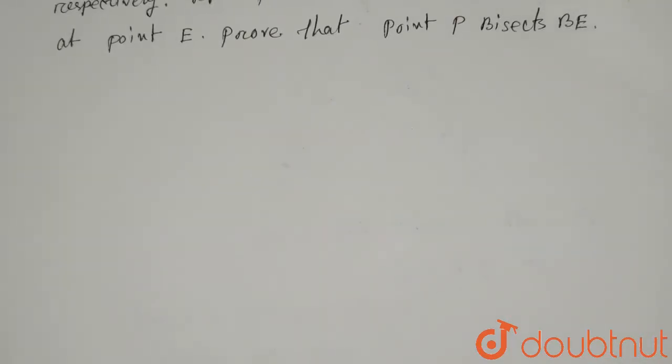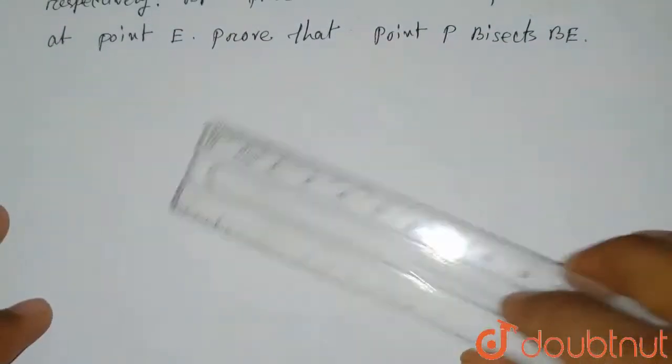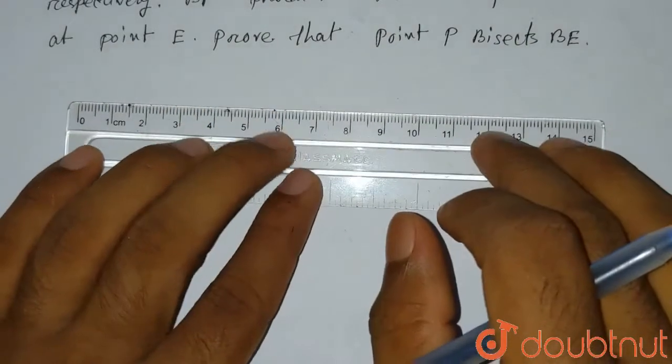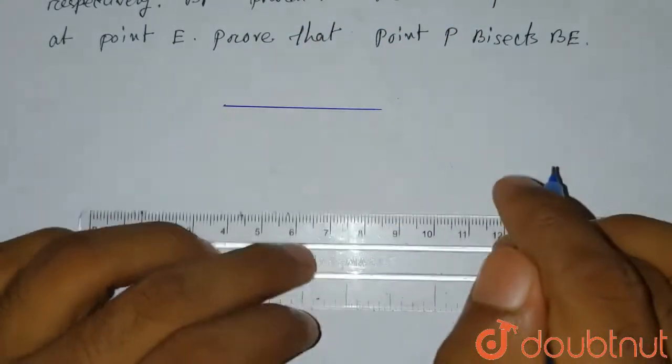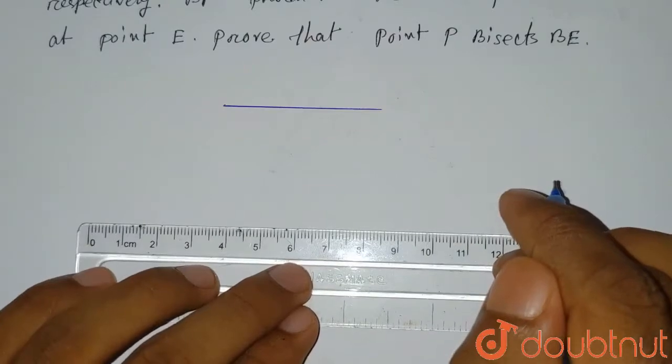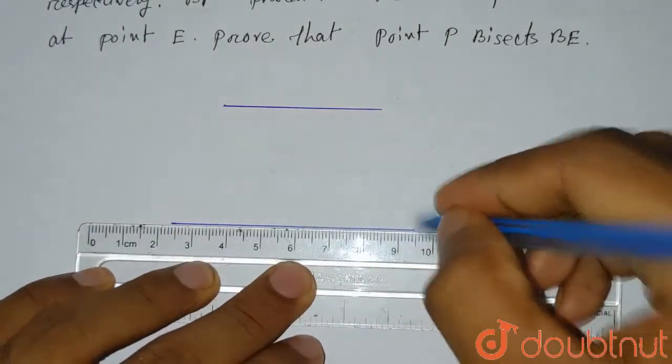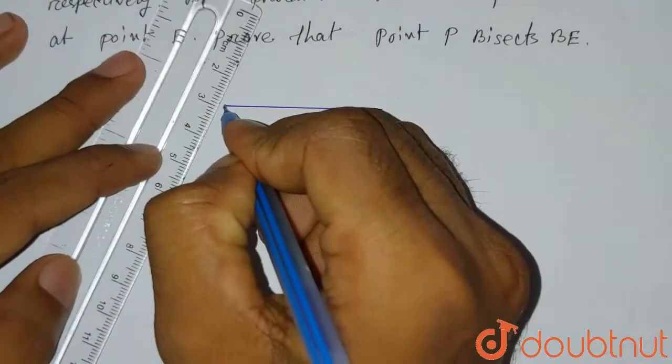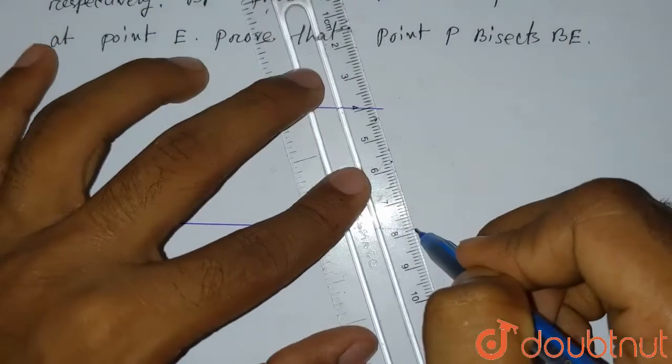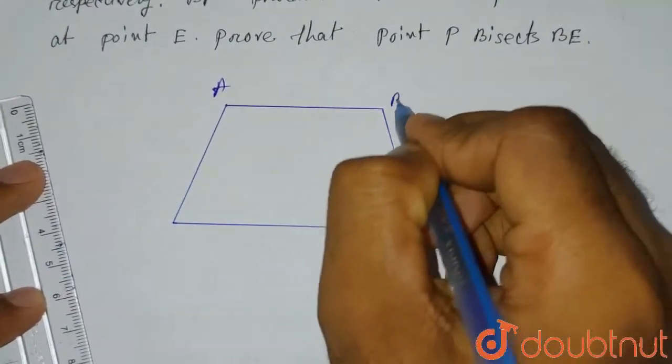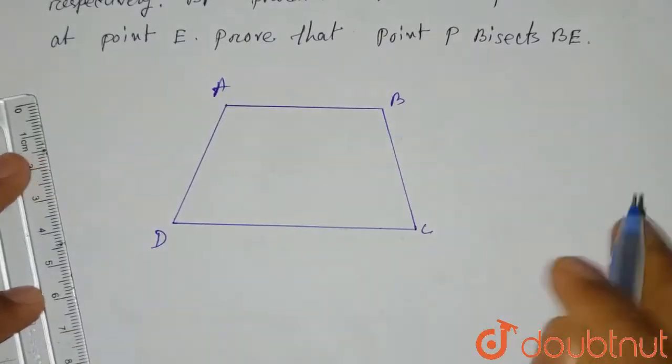Before we start, we need to draw the diagram. So let's draw the diagram of this question. Here in the trapezium ABCD, it is given that AB is parallel to DC. Let's say this side is AB and this side is our DC side. So let's join A and D, and B and C. This is A, B, C, D.